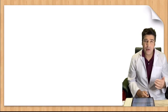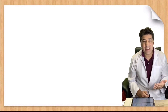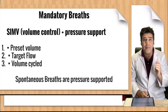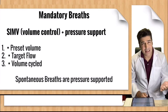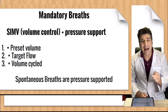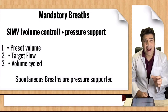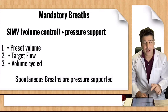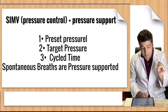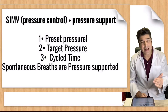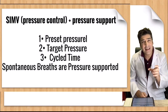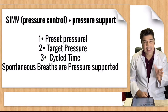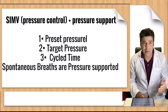In SIMV volume control plus pressure support, volume is preset, the target is flow, and the cycle is either volume or time. The spontaneous breaths are pressure supported. In SIMV pressure control plus pressure support, pressure is preset, the target is pressure, and it is time cycled. The spontaneous breaths are also pressure supported breaths.